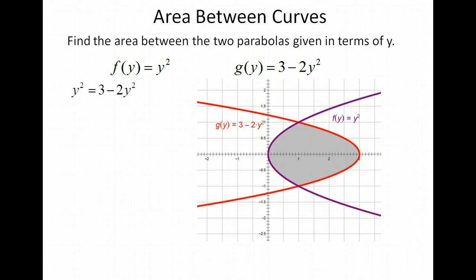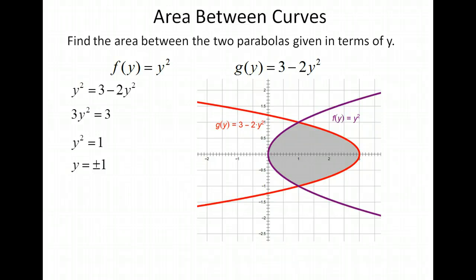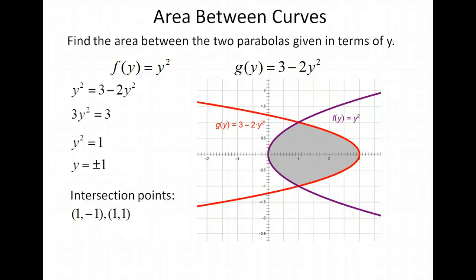We're going to first find our intersection points by setting the two equations equal to each other and isolating y. These two graphs are intersecting where y equals 1 or y equals negative 1. Now we're going to plug negative 1 and 1 into our functions and get the two ordered pairs they have in common, at 1, negative 1 and 1, positive 1. Now that we know what our intersection points are, we can do the integration. We also know that the f of y function is going to be on the left and the g of y is on the right — we know that just by graphing these as conics.